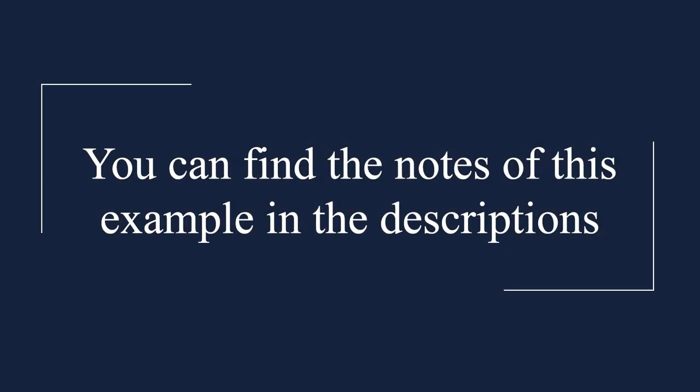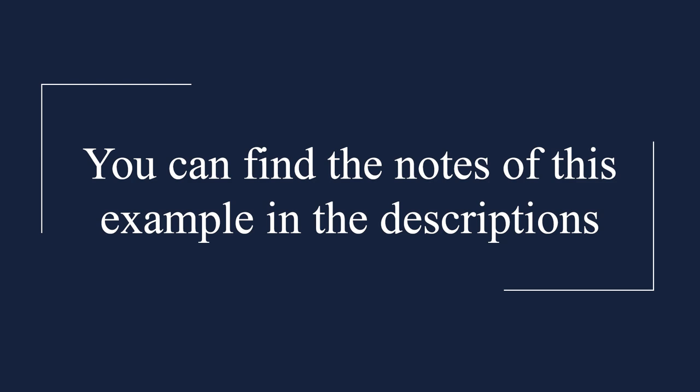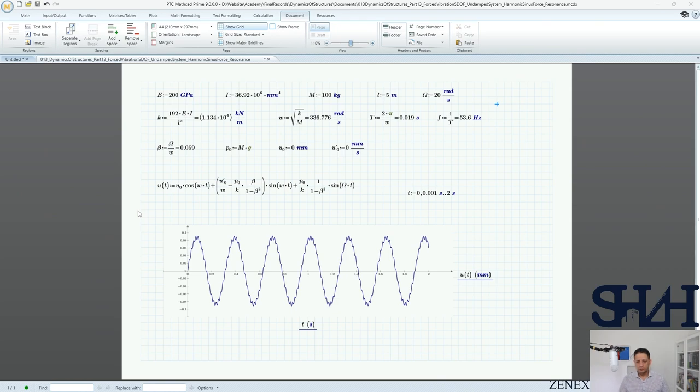And I promised we would go through that later. This is the solution that we had. As we can see the harmonic load frequency is 20 radians per second and the natural frequency is far from that, it is 336. And we can see that beta is quite a small value compared to the applied load.